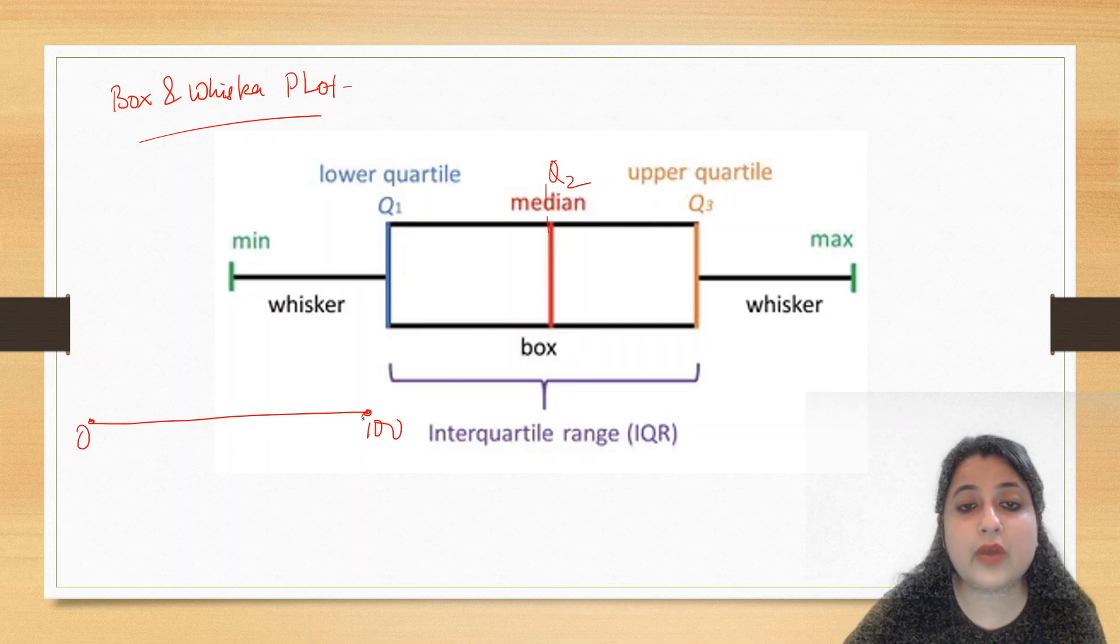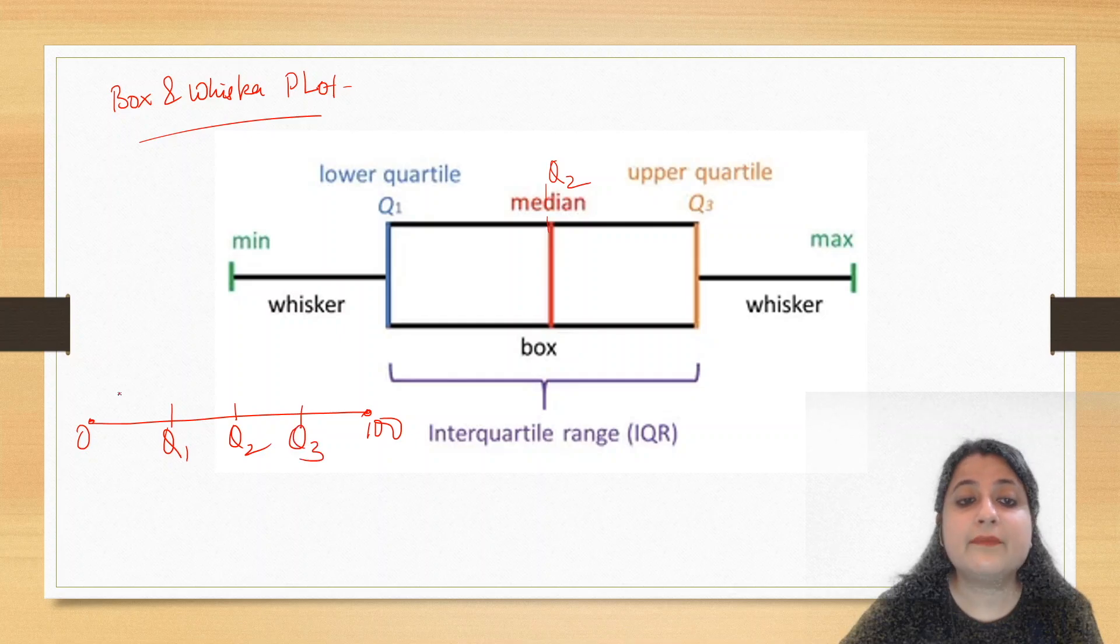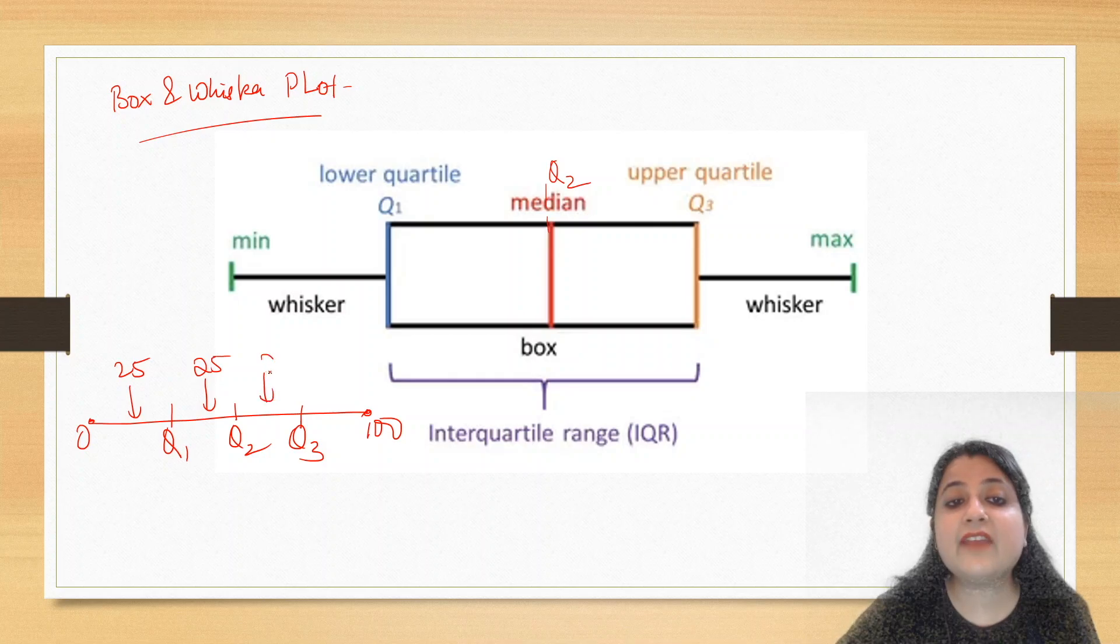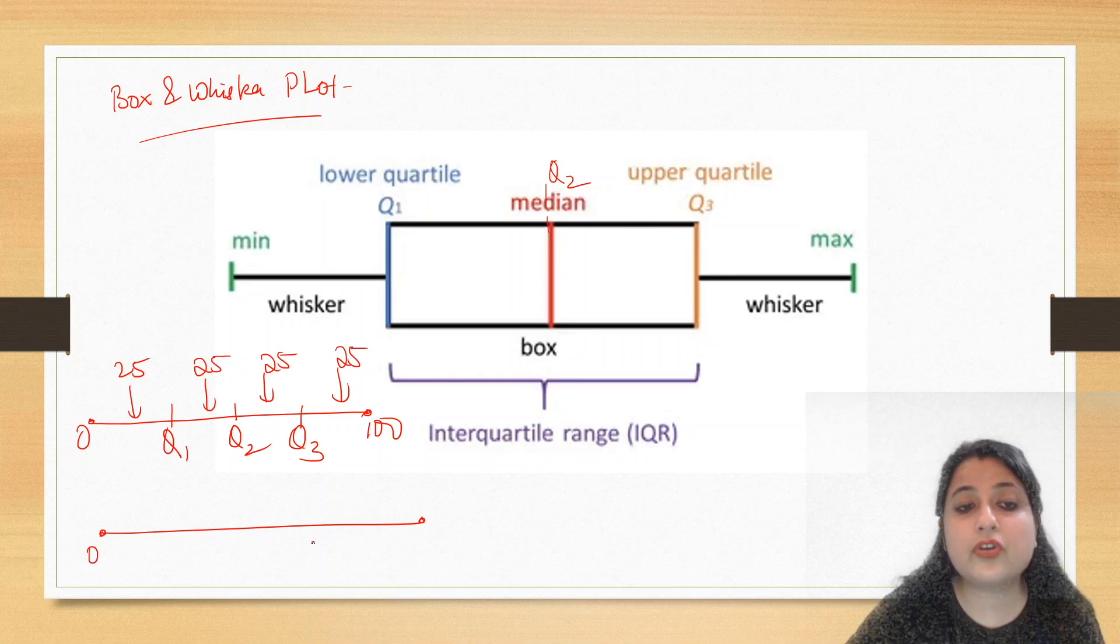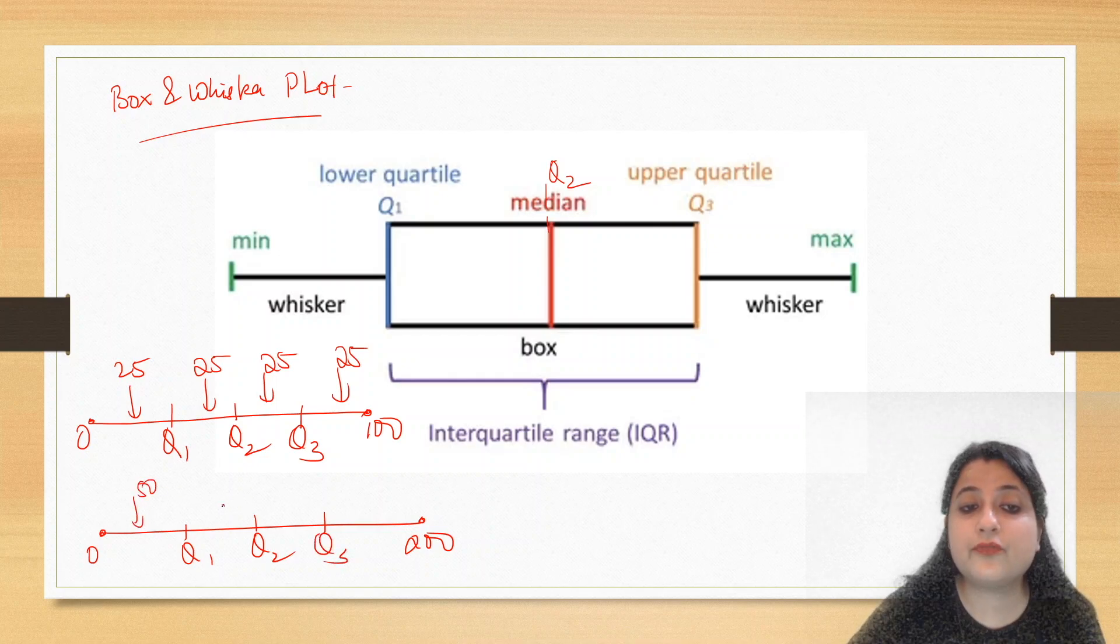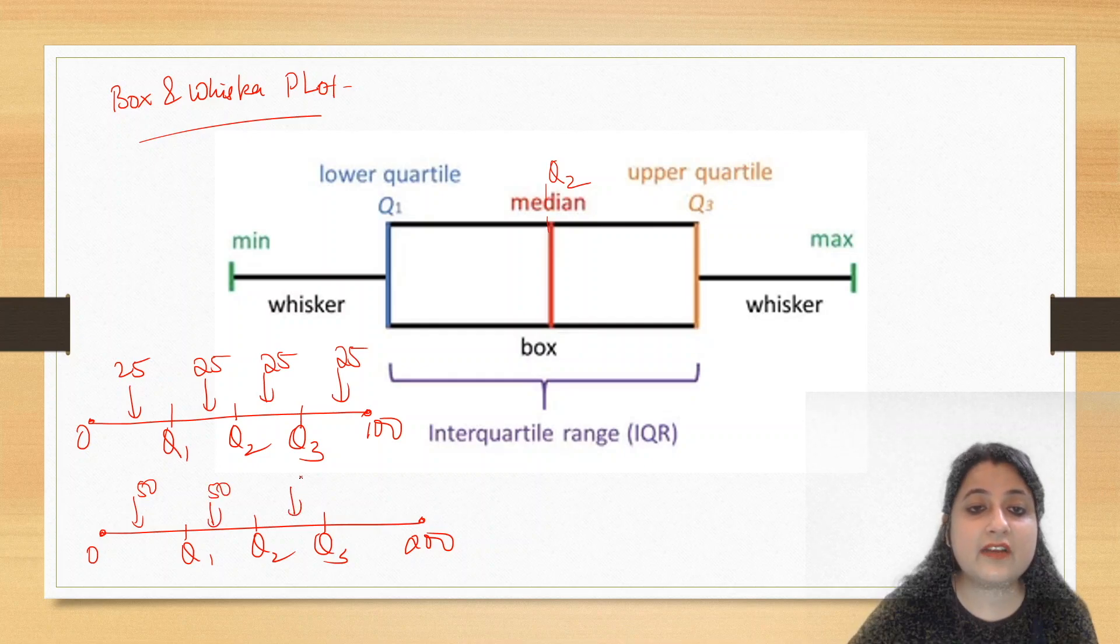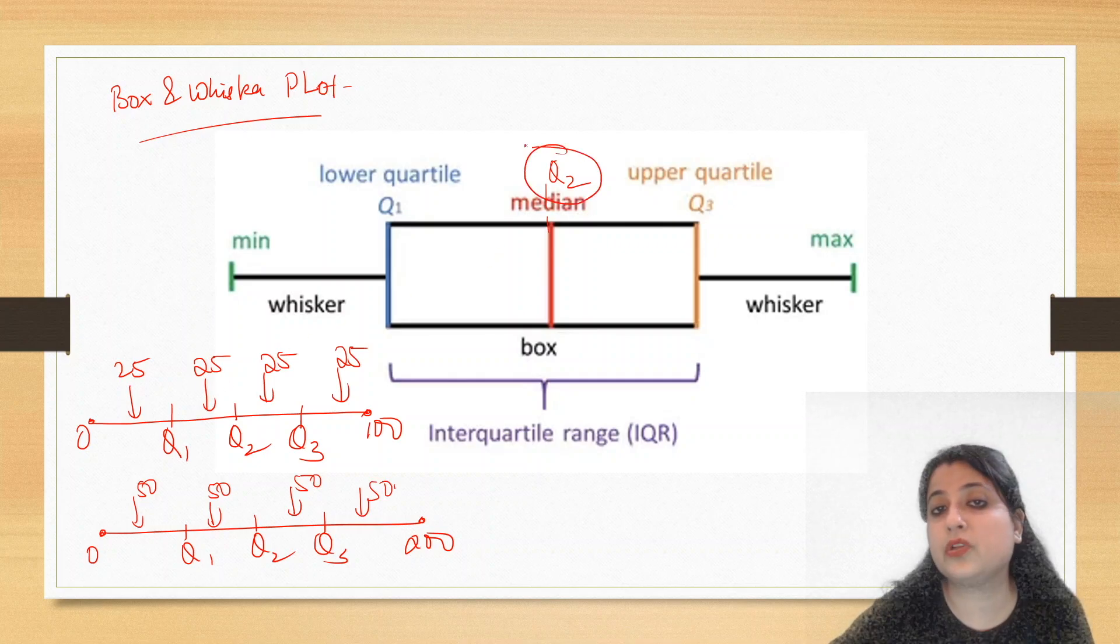Let's quickly revise about quartiles. What are quartiles? If I have a data set from 0 to 100, quartiles Q1, Q2, Q3 divide my data set into four equal parts, so each part is 25, 25, 25, and 25. This median, we call Q2, the middle value.